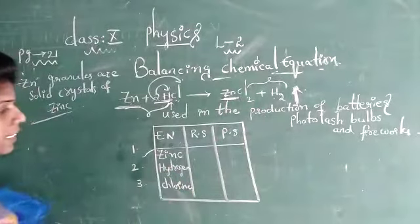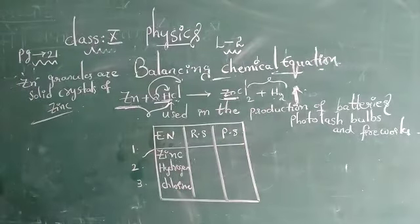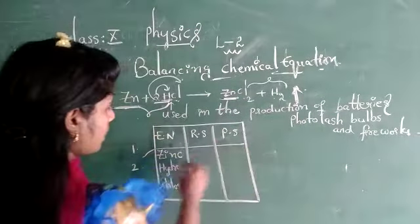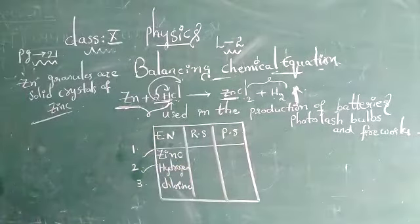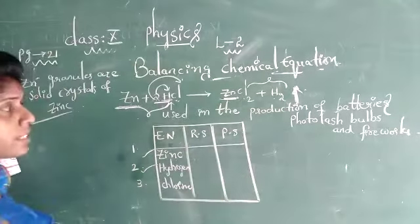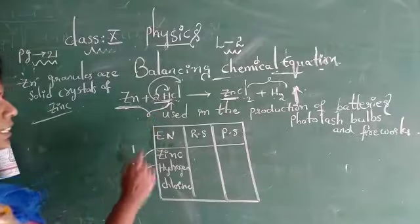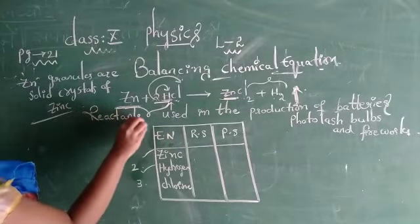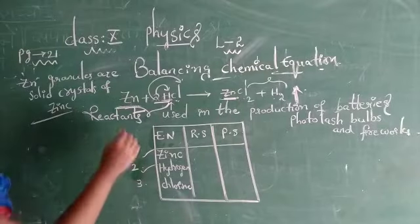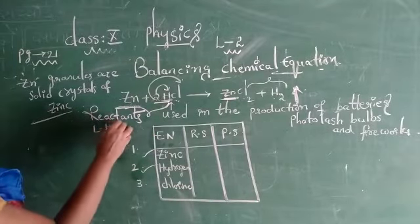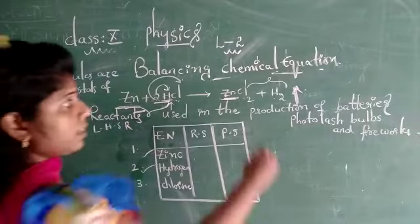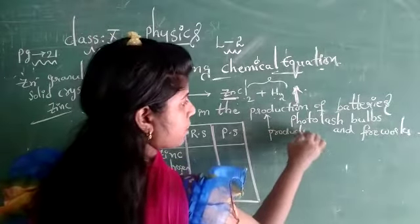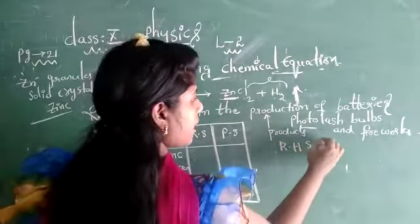Zinc, hydrogen, and chlorine are already entered, so no need of writing them a second time. Now you have to find the coefficients near the reactants. The left side term is said to be reactants — it is also called the left hand side. The right side is said to be products — it is also called the right hand side.